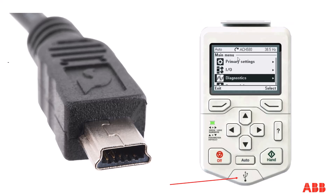Before we get started, I wanted to show how the connection is made to the drive. It uses a USB mini cable — I've included a picture of what that connector looks like, because there are so many different types of USB cables. The red arrow indicates a small cover on the panel that you open to make the connection directly to the drive.